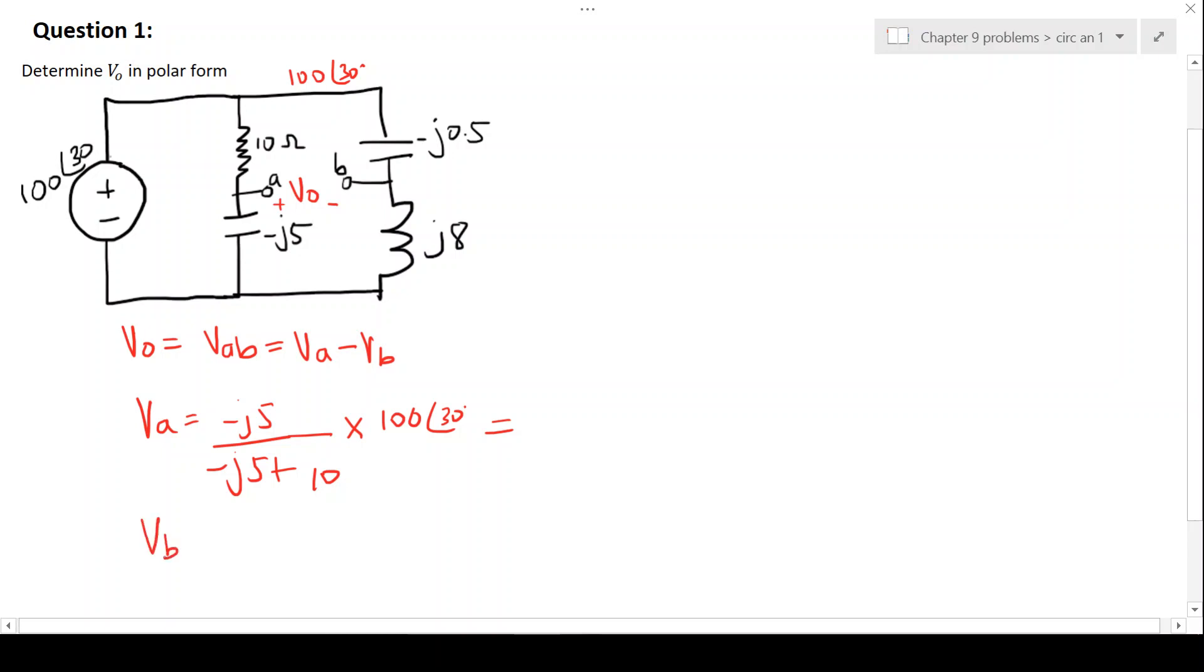And VB is going to give us J8 over J8 plus negative J0.5 all multiplied by 100 angle 30.